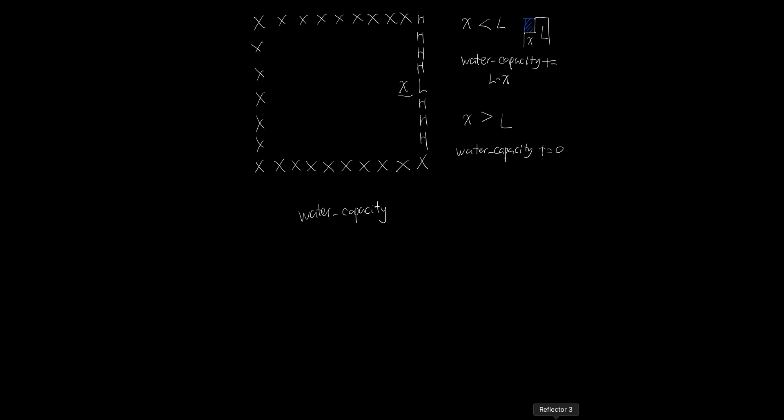We also know if X is larger than L, the barrier basically shrinks. Before, the barrier was at L, but when X is higher, L becomes useless and X becomes the new highest point. So any water is no longer determined by L — it's determined by another lowest point somewhere along the edge. There's no guarantee L is still the lowest point, so you need to look at your data structure and find another lowest point.